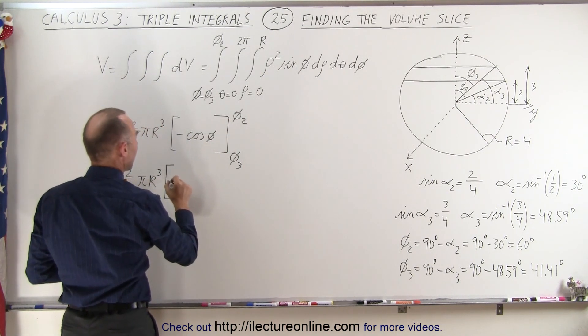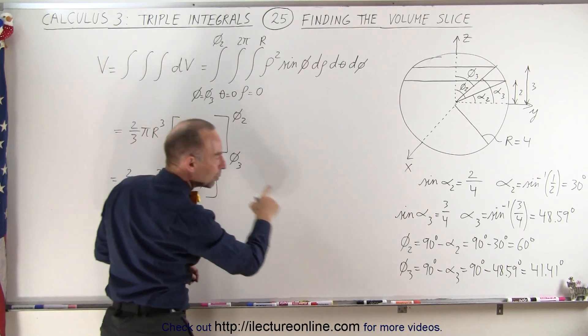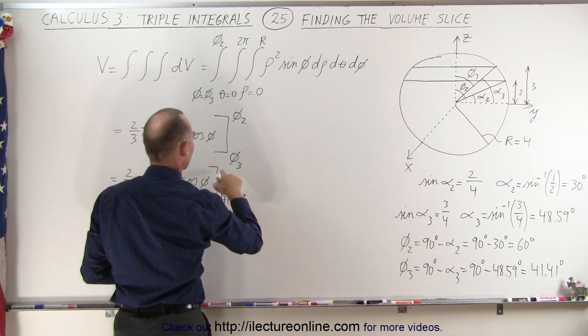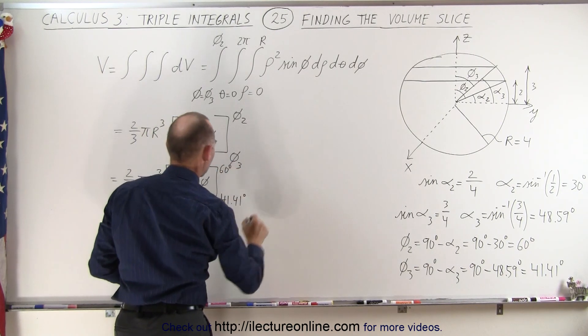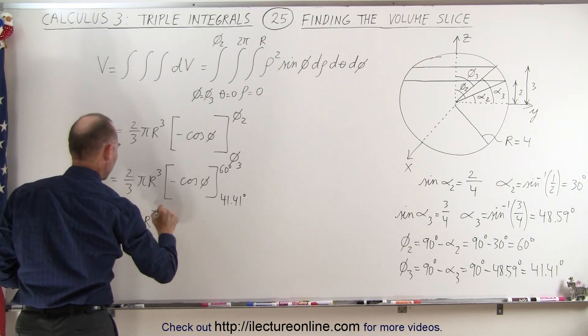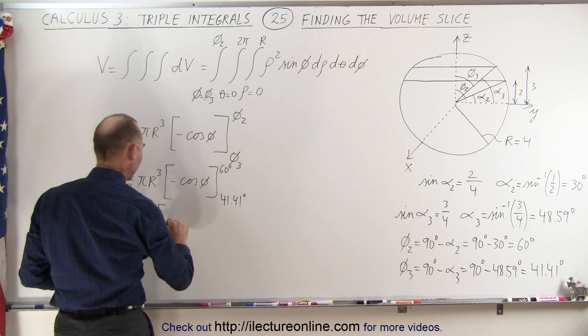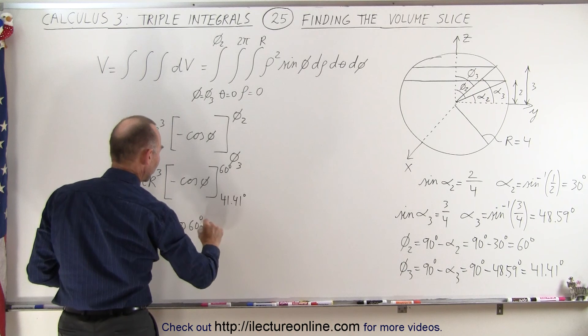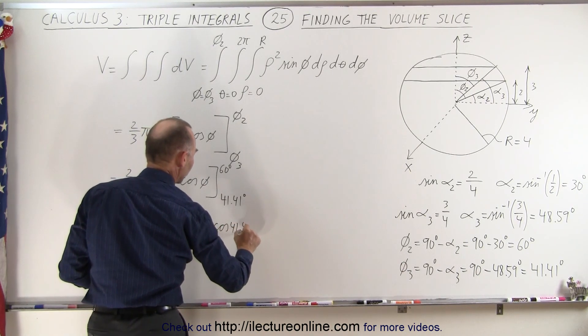So this becomes minus the cosine of phi evaluated from phi 3 which is 41.41 degrees to phi 2 which is 60 degrees. So this gives us 2/3 π r³ times, when we plug in the upper limit we get minus the cosine of 60 degrees minus a minus, because it's plus the cosine of 41.41 degrees.